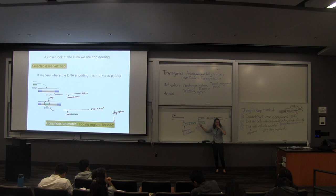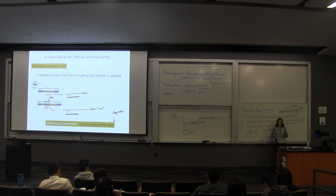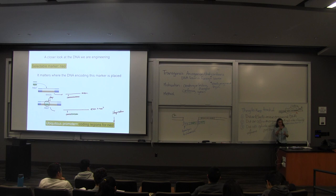A student asks: are we inserting the neomycin resistance at a different part than the other genetic information we're engineering in? No — this whole piece is together; the neomycin resistance is not somewhere in a different chromosome. A student asks about the coat color: NeoR is just for part one — did our cells get the DNA? The coat color is for a separate question — the fact that we start with cells in a dish and eventually want to make a mouse. So part one: NeoR tells us we have engineered cells with DNA. Part two: the coat color marker tells us those cells contributed to the new baby mouse.